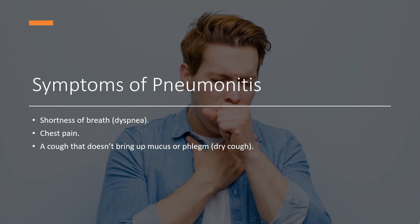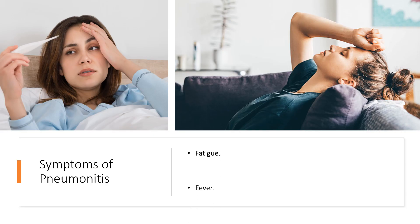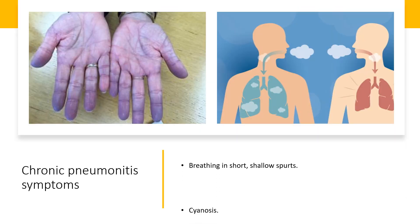Symptoms of pneumonitis: Early signs include common cold-like symptoms such as shortness of breath (dyspnea), chest pain, and a dry cough that doesn't bring up mucus or phlegm. Other symptoms may include fatigue, fever, flushed skin, and sweating. Chronic pneumonitis symptoms may include breathing in short, shallow spurts, cyanosis, and unintentional weight loss.